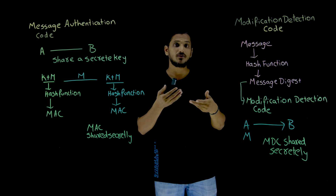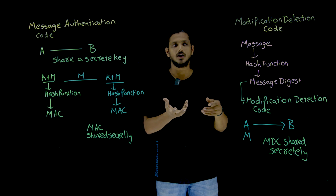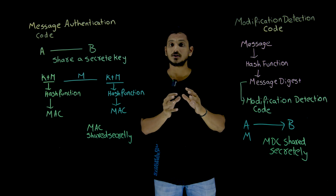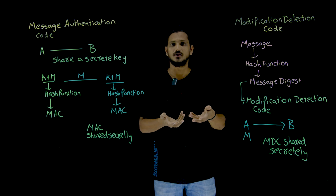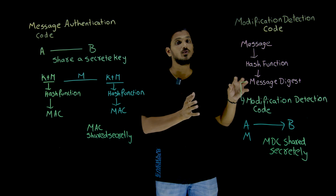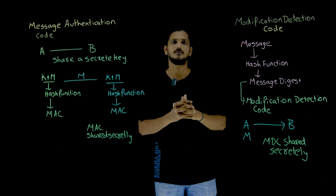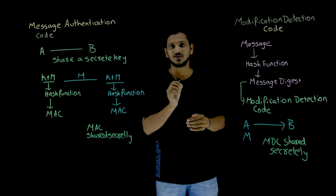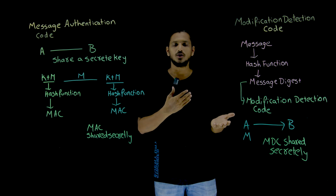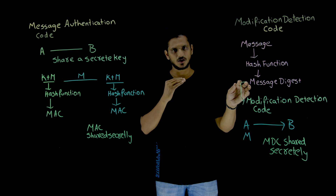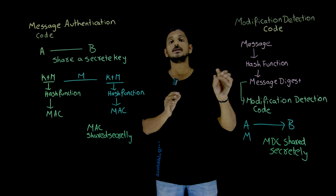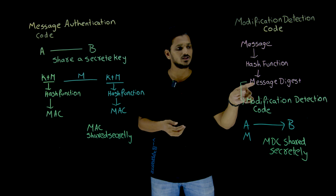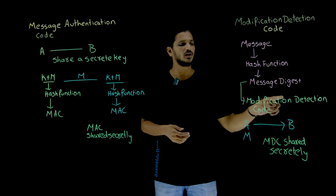Coming to today's class: Modification Detection Code. These concepts are based on message integrity — we need to identify whether the message is modified or not. We take the message and give it as input to the hash function. This hash function is going to generate a message digest of 512 bits — it may be 512, it may be 256, whatever it may be. This message digest is used for modification detection, and that's why we call it the Modification Detection Code.